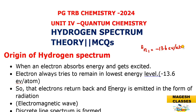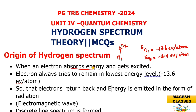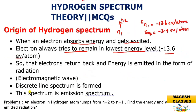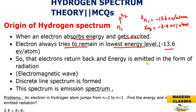The energy of the second orbit is minus 3.4 electron volt per atom. The energy is fixed. When an electron absorbs energy, it moves from n=1 to n=2. The photon absorbs energy, the electron gets excited and goes to the upper energy level n=2. The electron tries to remain in the lowest energy level, that is minus 13.6 electron volt.